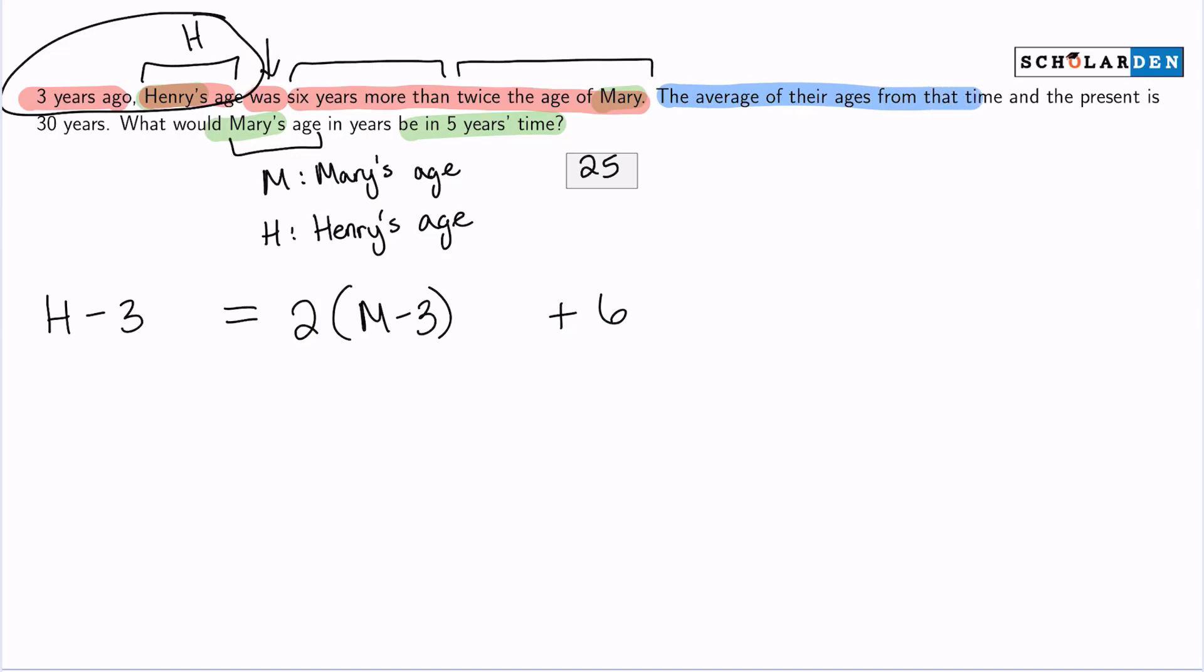Let's see if we can use the second sentence to pull more information. The average of their ages from that time and the present time is 30 years. I know average—average is add everything up, divide by the number of numbers, and you get your average. So somehow the average is 30. How many ages are we adding up? Three years ago, Henry was H minus three years old, Mary was M minus three years old. So those are two ages.